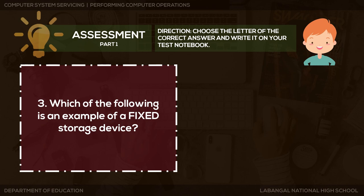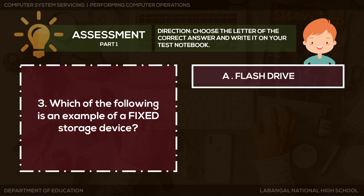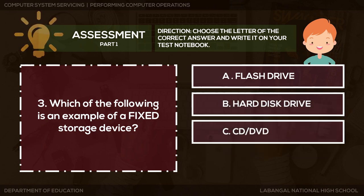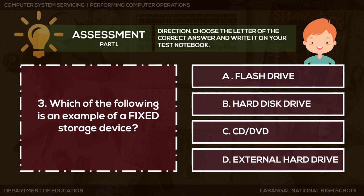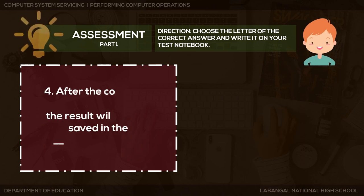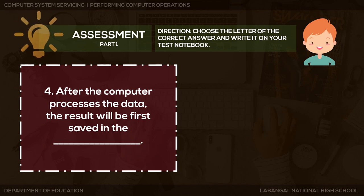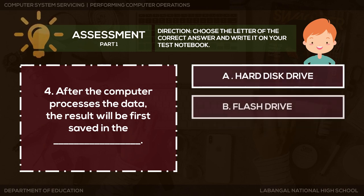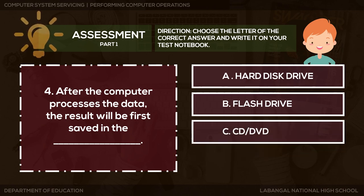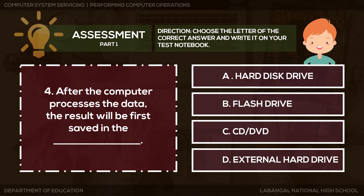Question 3: Which of the following is an example of a fixed storage device? A. Flash Drive, B. Hard Disk Drive, C. CD or DVD, or D. External Hard Drive. Question 4: After the computer processes the data, the result will be first saved in the blank. A. Hard Disk Drive, B. Flash Drive, C. CD or DVD, or D. External Hard Drive.